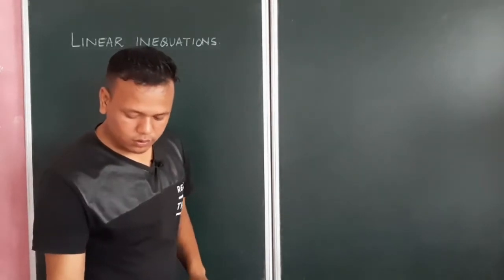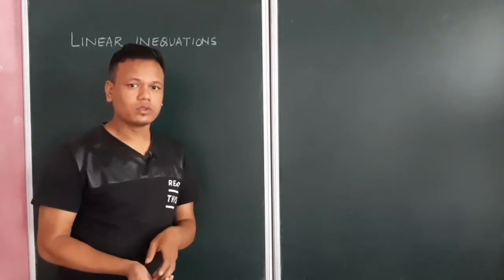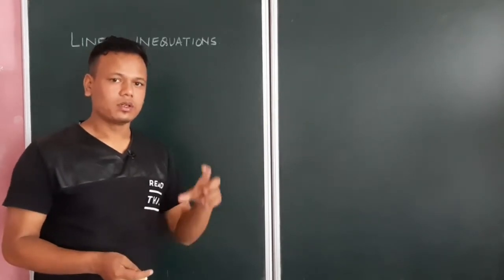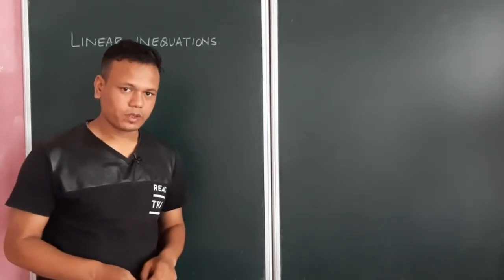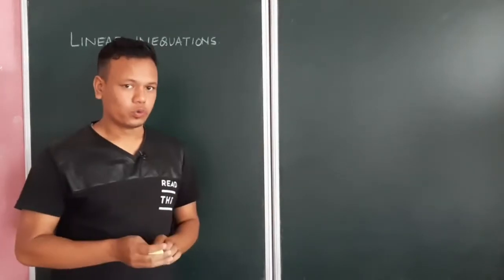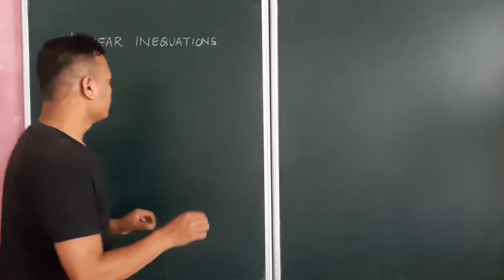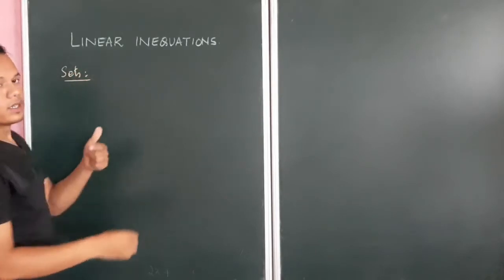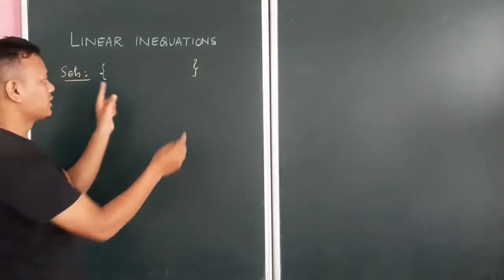The first thing we are going to learn is about sets. Although there is a separate chapter on sets, we will learn a few basic terms before that. So, what is the meaning of sets? As the name suggests, a set means a group, and that group is always represented in a curly bracket. Sets means it is a group of objects, and those objects will be placed inside this bracket.